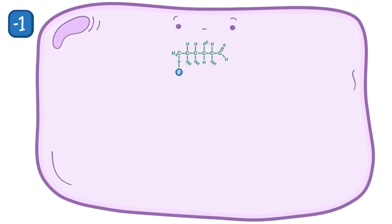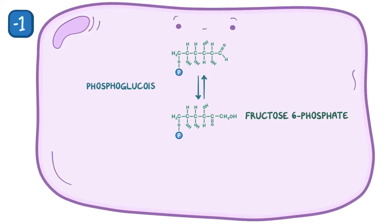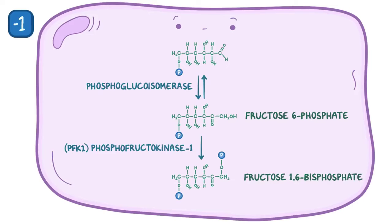Glucose-6-phosphate is then converted to its isomer, fructose-6-phosphate, by an enzyme called phosphoglucoisomerase. So at this point, it's still a 6-carbon molecule. Fructose-6-phosphate is then phosphorylated by the enzyme phosphofructokinase-1, or PFK1, which adds a phosphate group to the first carbon on the fructose molecule, making fructose-1,6-bisphosphate. This is the second irreversible reaction in glycolysis, and it also uses ATP as a phosphate source, so now we're at minus 2 on the energy counter.